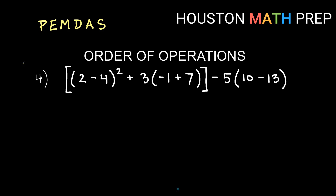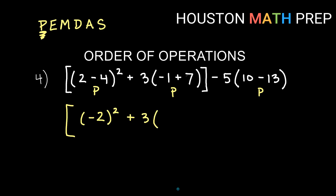Last problem. We have round parentheses and square brackets. We start with the innermost parentheses first and work outward — brackets are just another set of parentheses, drawn square outside the round ones so it's easy to tell what's grouped with what. Inside the round parentheses on the left: two minus four gives negative two, and then we square that. On the right side: negative one plus seven gives six. And on the far right: 10 minus 13 gives negative three.